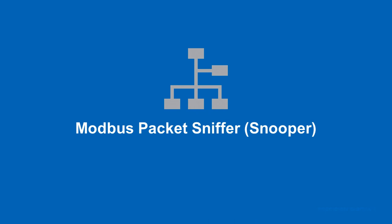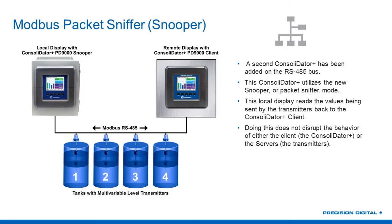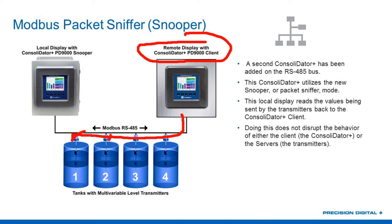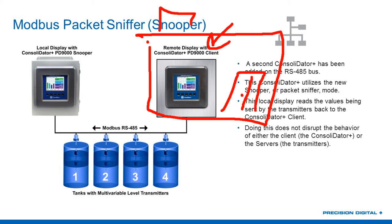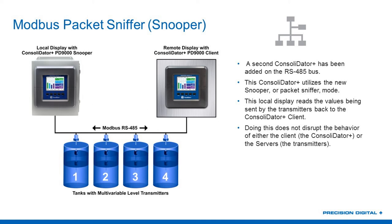The second feature is the Modbus Packet Sniffer or Snooper Mode. What that lets you do is read information on the Modbus communication bus without the need to reprogram anything that is already active in your system. We're going to take a look at an example where we assume the system we just looked at is active — I have my Modbus client in the control room reading out information from four multivariable level tanks, but I'd really like to have a display pole-mounted right next to those tanks out in the field.